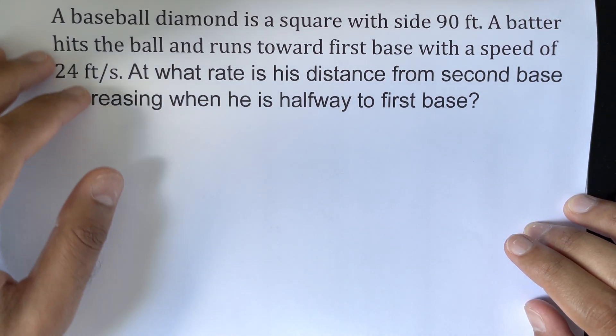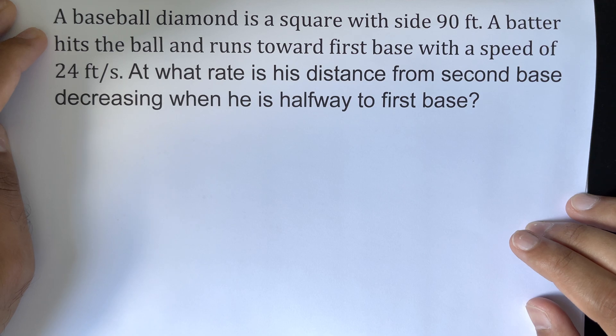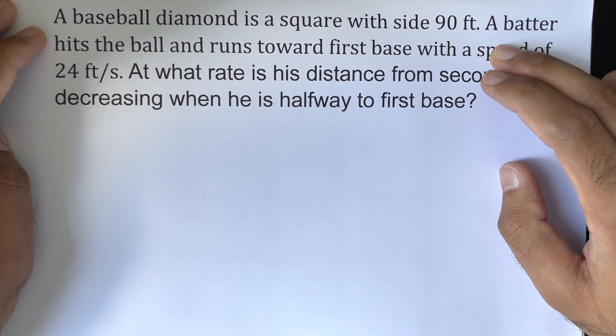Okay, we have this question: a baseball diamond is a square with side 90 feet.